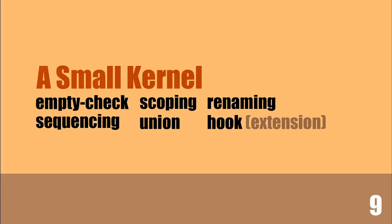The next principle is to have a relatively small kernel, and our design only has six constructors. The first one is to check whether something is empty for the typo detection we just discussed. If you don't care about that, you only need five. And the last one provides a mechanism to extend the language with plugins — if you don't need that either, you only need four. All the features we have discussed can be implemented using these four basic constructors: scoping — applying some modifiers to a sub-namespace — renaming, the sequencing operation we discussed, and union.